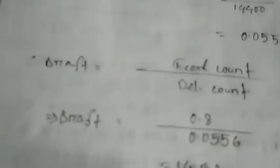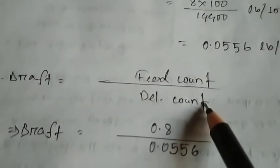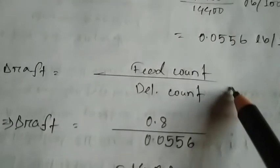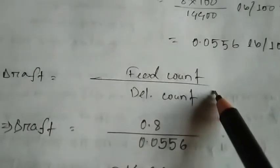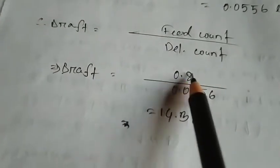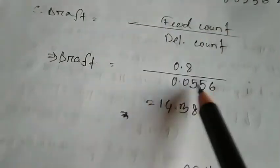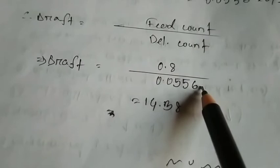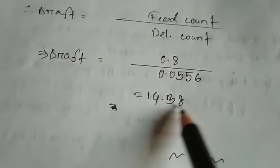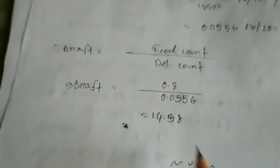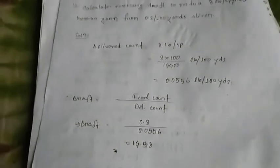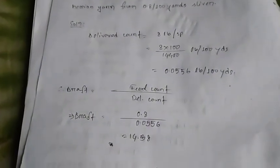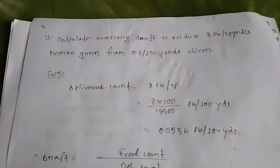So when we have the drafts, we have the feed count by delivery count, and we have the direct count, and we have the length fixed. So we have the calculation to do that. The draft is 0.8, feed count by delivery count by 0.05, and we have the 3438. So I will do that.